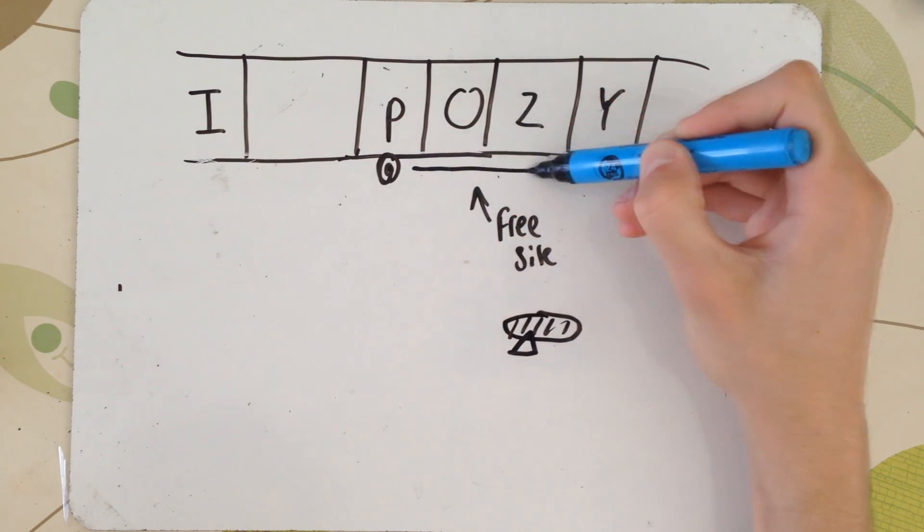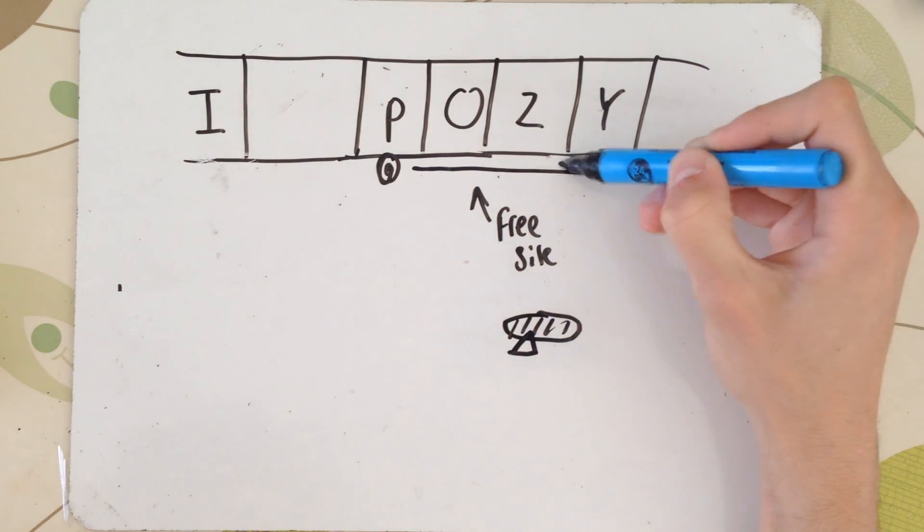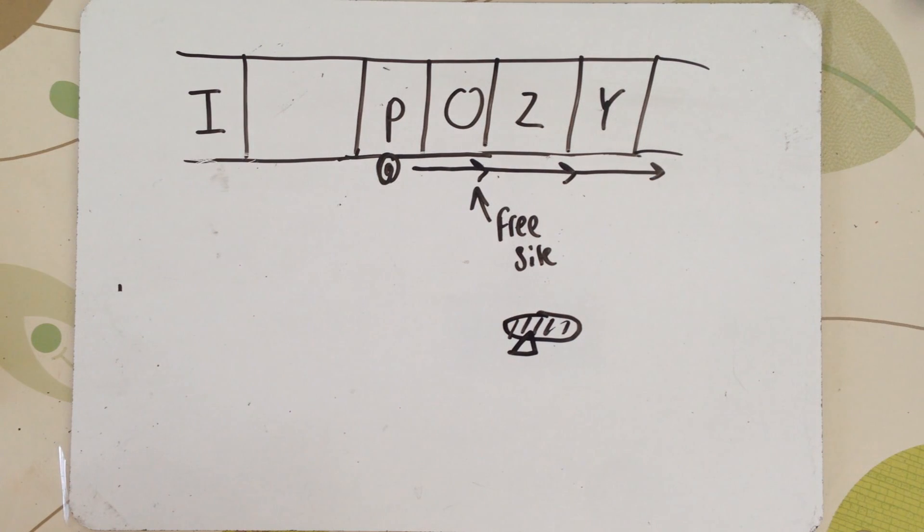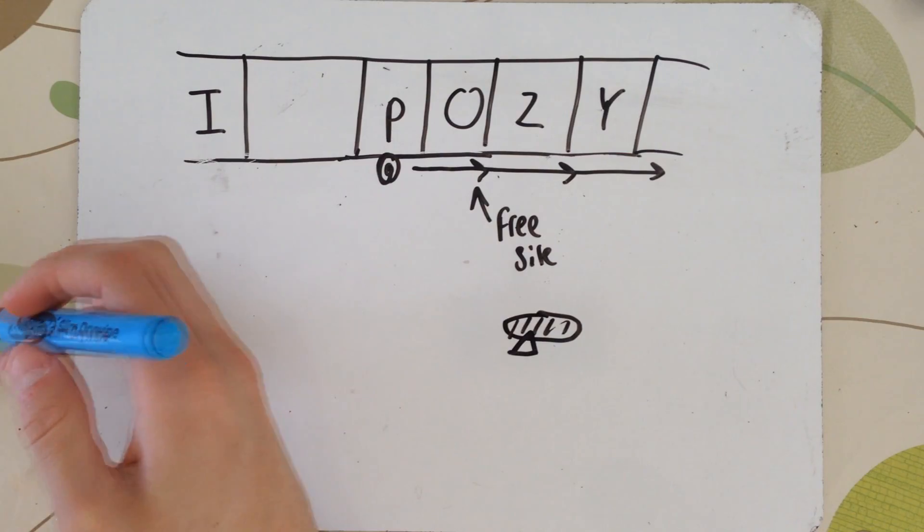So, since the site is now free, as there's no repressor protein situated there, RNA polymerase can bind to the P. This means it can then move along, transcribing the genes.